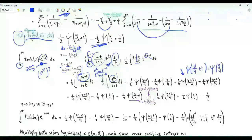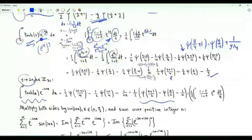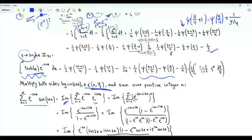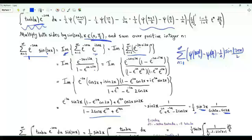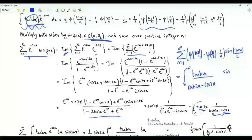Simplifying, the integral equals (1/2)ψ((y+2)/4) − (1/2)ψ(y/4) − 1/y. Replacing y by y−2n, multiplying by sin(2nx), and summing over positive integers n (with x in (0, y/2)), the left-hand side becomes Σ_n e^{−2nu} sin(2nx) after interchanging summation and integration. Since sin(2nx) = Im(e^{i2nx}) and u is positive, this is a convergent geometric series, whose imaginary part gives sin(2x)/(2(cosh(2u)−cos(2x))).